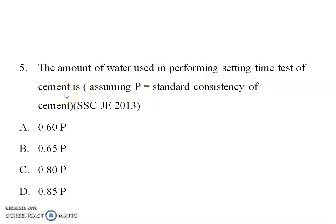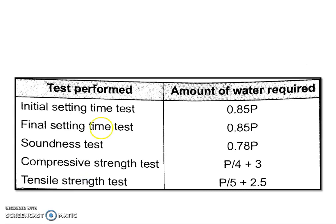For standard consistency, we use 0.85P water. Option D is the answer. For initial setting time, the water used is 0.85P. For compressive strength, water is P/4 plus 3. For tensile strength, water is P/5 plus 2.5. The standard consistency formula uses 0.85P.